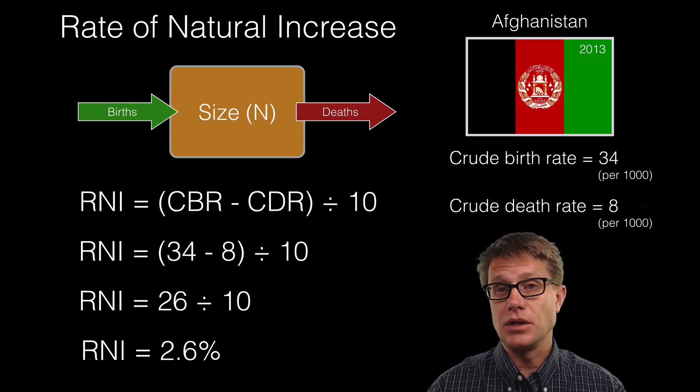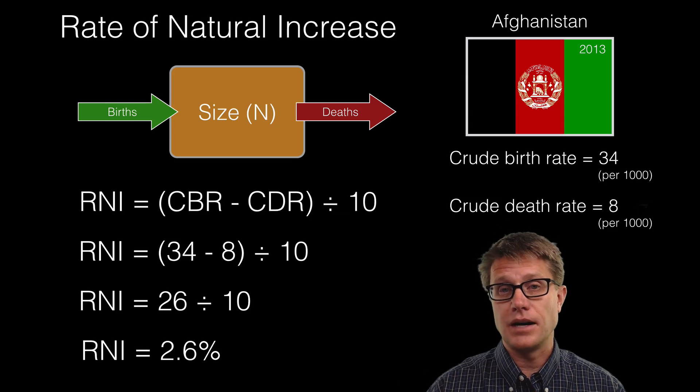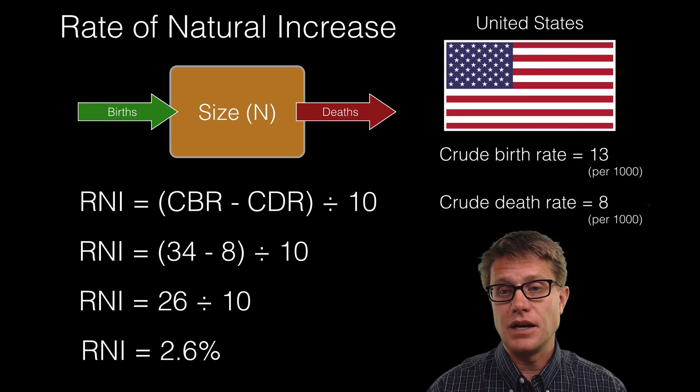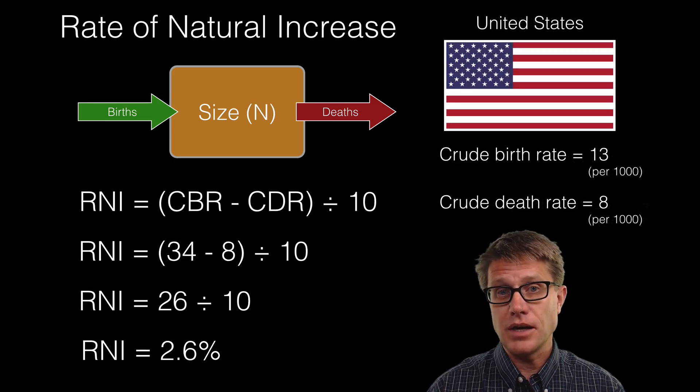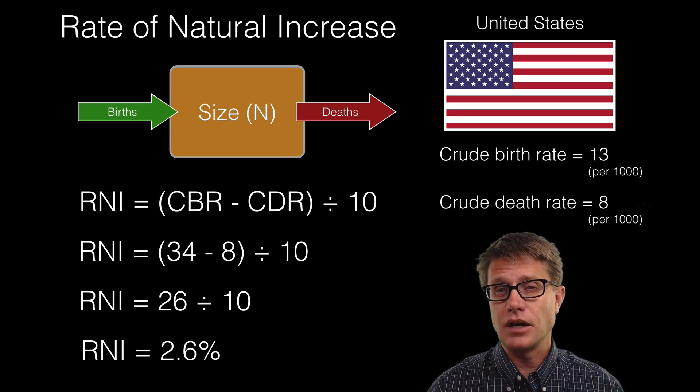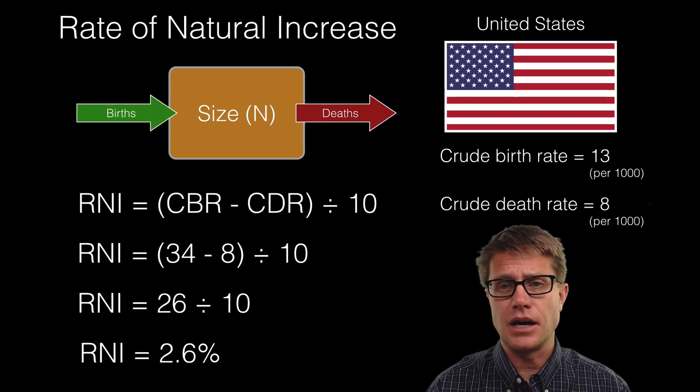And so that means this population is going to be increasing over time. Now you could try one with the United States if I give you the birth rate and the death rate? Could you calculate that rate of natural increase? I hope so. I will put the answer in the description down below.